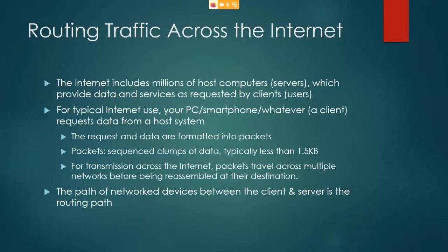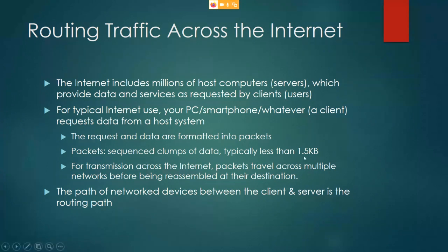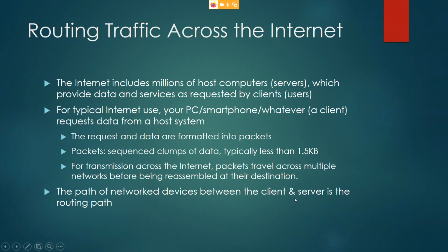The internet has millions of host computers — servers — that provide data and services as requested by clients, the ordinary users. Your PC or smartphone is the client machine requesting data from a host. When you go to a website, you're requesting a copy of the webpage. That request and data get formatted into packets — little envelopes of data, typically less than 1.5 kilobytes. Those packets can travel across multiple networks and get reassembled at the destination. The path of network devices between client and server is called the routing path.